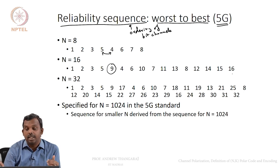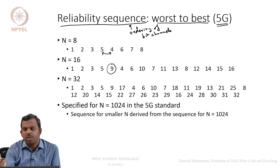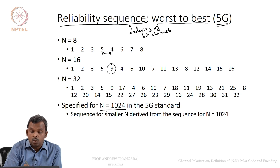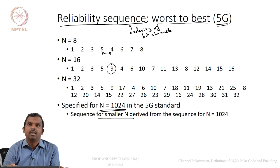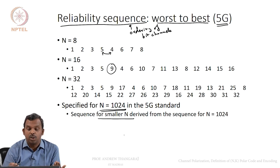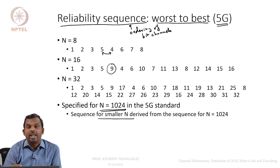All these numbers are pulled from the 5G standard, which specifies the reliability sequence for N equals 1024. The sequences for smaller N are derived from the sequence for N equals 1024. If you have access to the 5G standard, you can pick up the reliability sequence for N equals 1024 and then find the sub-sequences for N equals 8, 16, 32, and so on.